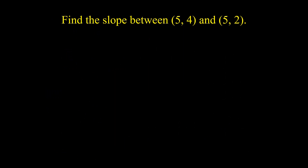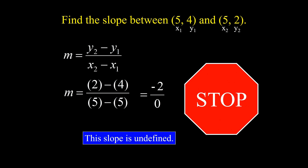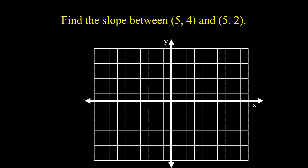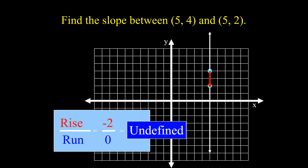Find the slope between (5, 4) and (5, 2). Using the slope formula: x sub 1 is 5, y sub 1 is 4, x sub 2 is 5, and y sub 2 is 2. Substituting: 2 minus 4 over 5 minus 5 gives negative 2 over 0. Stop — because this slope is undefined. Let us plot points (5, 4) and (5, 2) on the Cartesian plane and connect them. As you can see, we have a vertical line. Therefore, the slope is undefined if we have a vertical line.